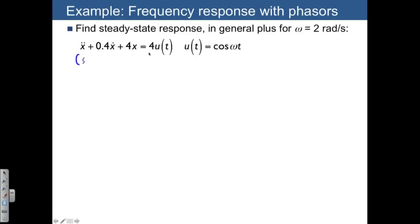Again, we want the transfer function using the s notation, and that's going to give us x over u is equal to 4 divided by s squared plus 0.4s plus 4.